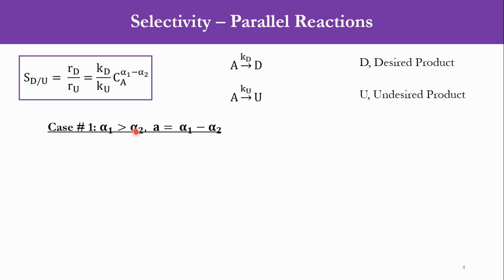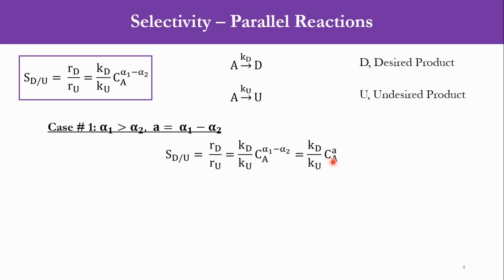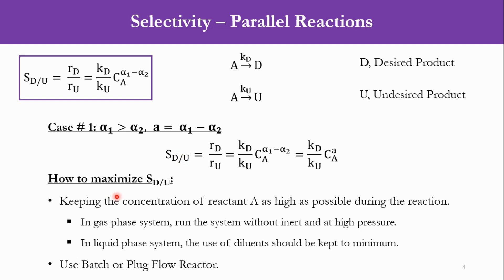Case 1: alpha 1 is greater than alpha 2. Let A equal alpha 1 minus alpha 2. The instantaneous selectivity is then directly proportional to the concentration of A. So if we want to increase selectivity, we have to keep the concentration of A as high as possible. In a gas phase system, we run the system without inert and at high pressure. In a liquid phase system, the use of diluent should be kept to a minimum. The reactor type for this case should be the batch or plug flow reactor.